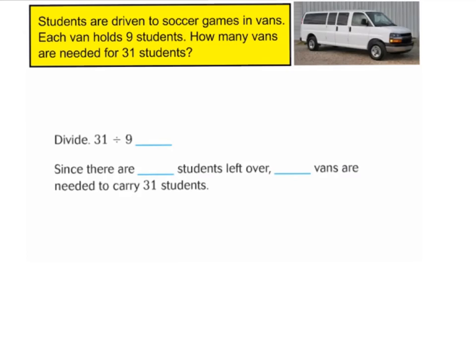I can list my multiples of 9 until I get close to 31, or I can draw a picture to help me visualize the word problem. I think I'm going to draw a picture because I can use vans and students to help me figure out the answer. I know there are going to be 9 students in a van, so I'm going to start drawing my 9 students and put them in a van: 1, 2, 3, 4, 5, 6, 7, 8, 9.